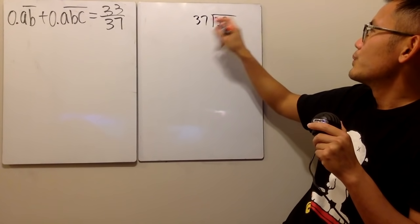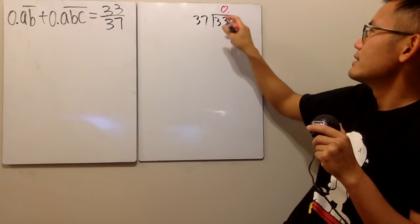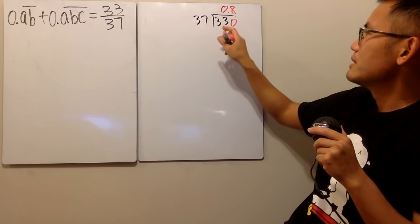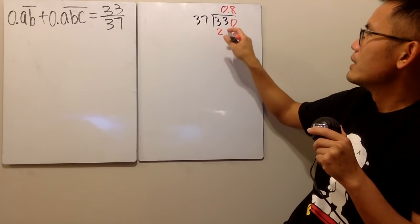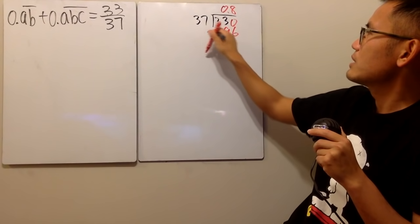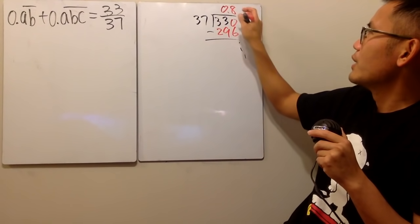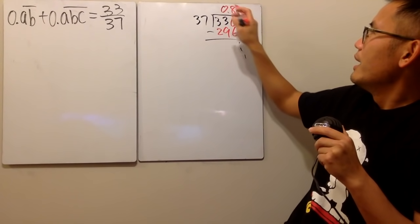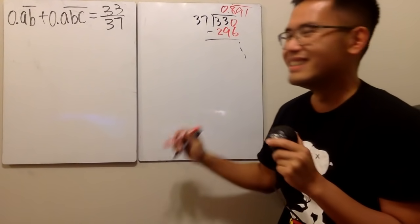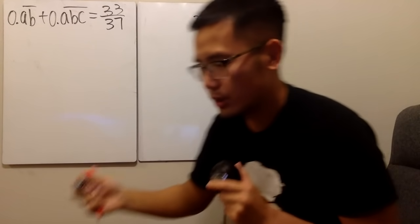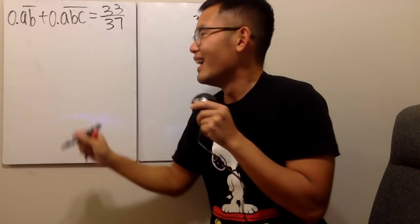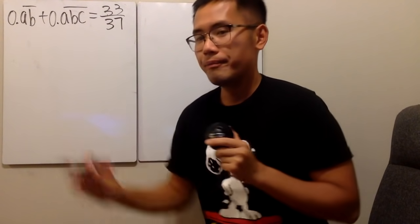Carrying out the long division, we get 0.891891891... and so on. That's just the result of the division.